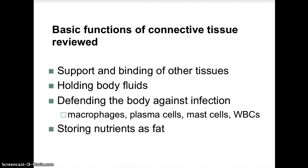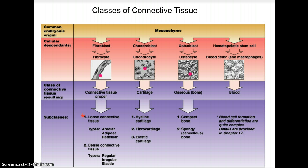Basic functions of connective tissue include support and binding of other tissues, holding body fluids, defending the body against infections via macrophages, plasma cells, mast cells, and white blood cells, and storing nutrients as fat. Our first class of connective tissue is connective tissue proper, formed from mesenchyme via fibroblasts and fibrocytes. The first subclass is loose connective tissue, with types being areolar, adipose, and reticular.